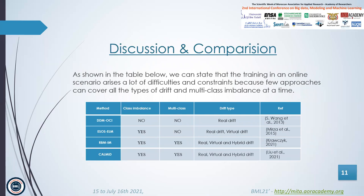For the discussion part, I have focused on a comparison between all these techniques to determine to what extent machine learning techniques detect both of these issues. As shown in the table, we can see that training in online scenarios raises a lot of difficulties and constraints, because few approaches can cover all the types of drifts and multi-class imbalance at the same time.